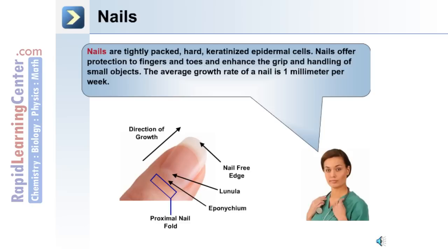The fourth type of integumentary derivative are the nails. Shown here in the image is a fingernail. The growth of the nail is towards the nail-free edge. The white half-moon shape seen under the nail is the lunula. At the point where the nail meets the skin, it's known as the eponychium. Adjacent to the eponychium is the proximal nail fold. Nails are tightly packed, hard, keratinized epidermal cells. They offer protection to the fingers and toes, enhance the grip and handling of small objects. The average growth rate of a nail is 1 mm per week.